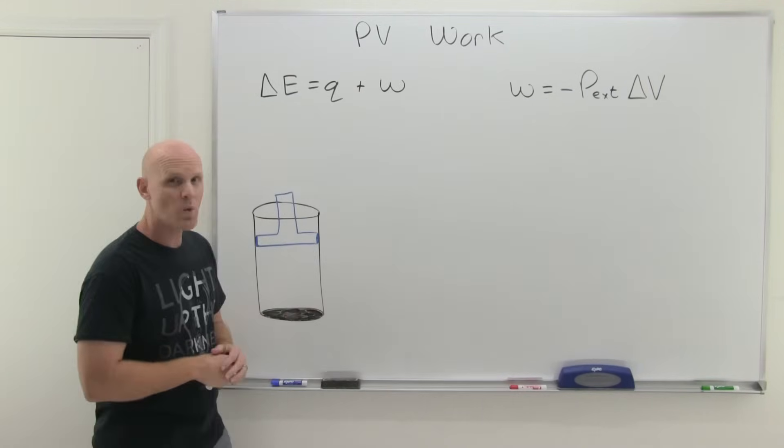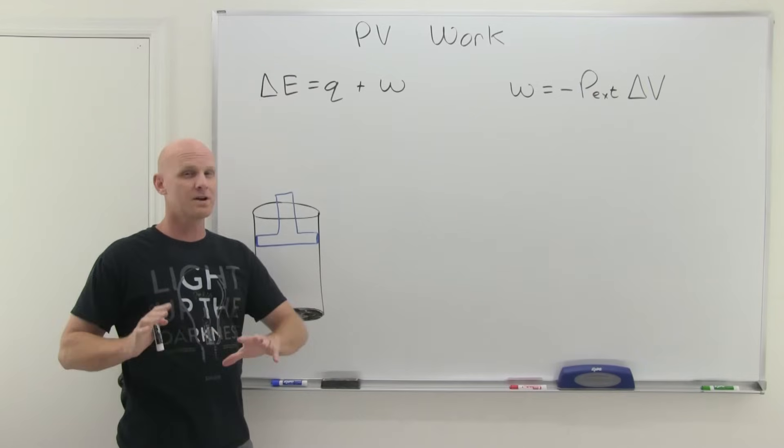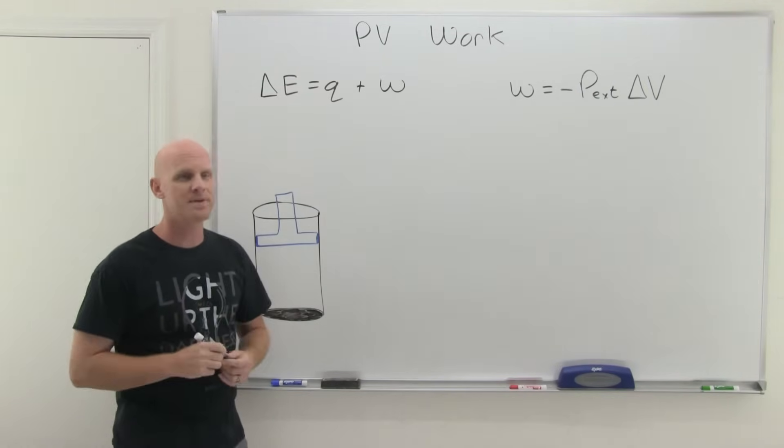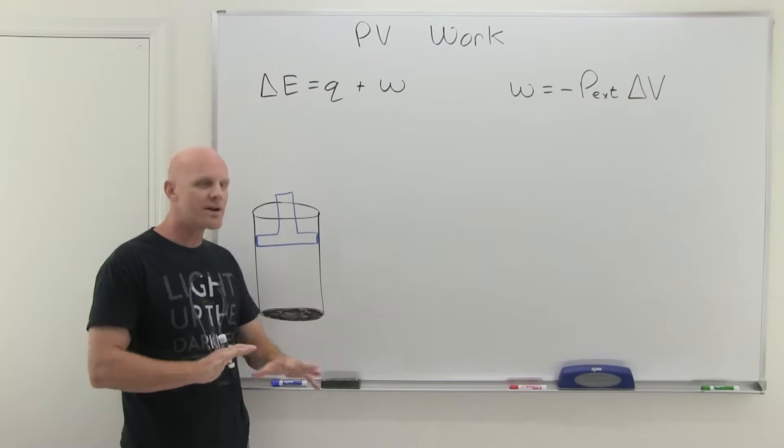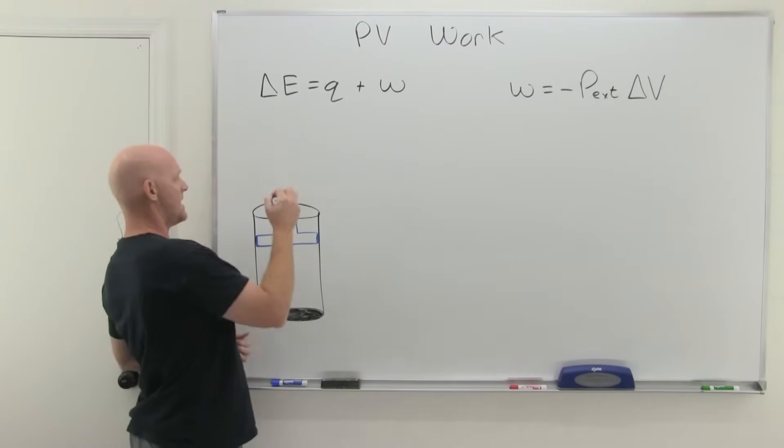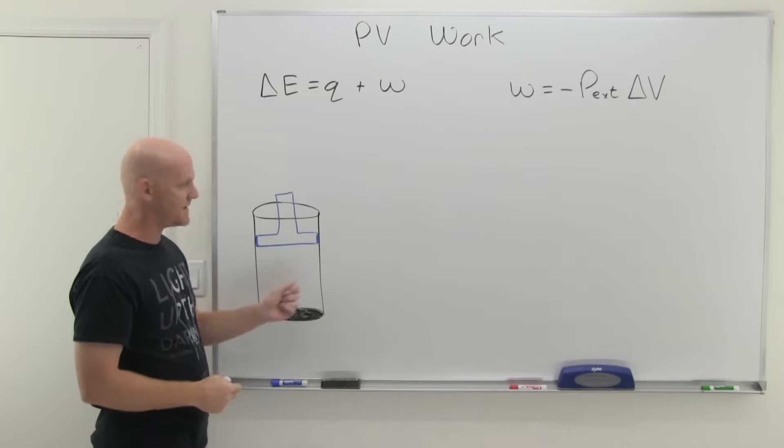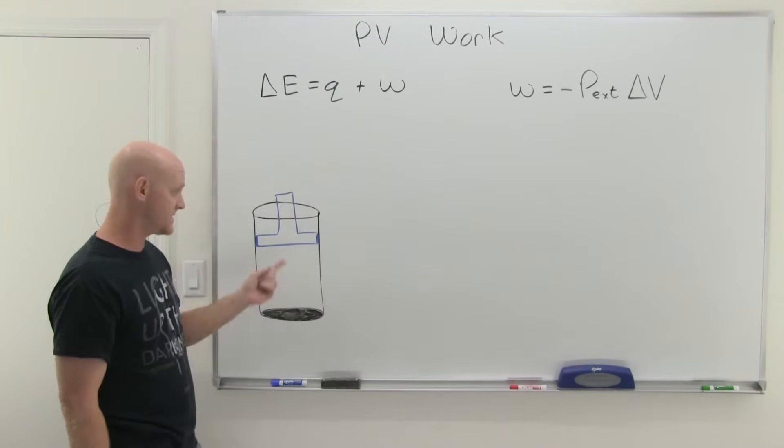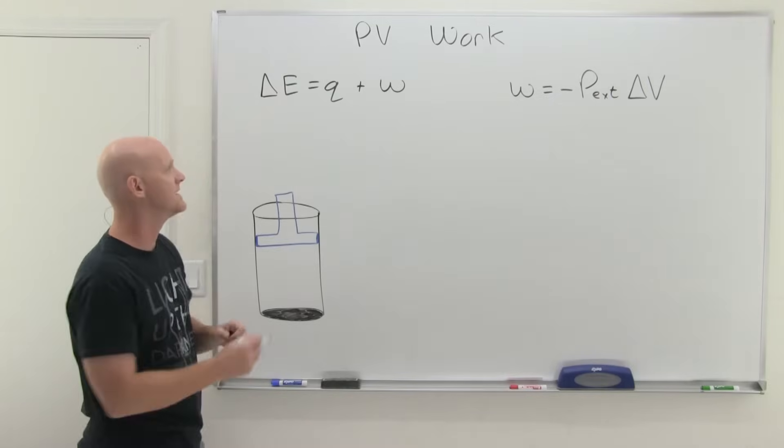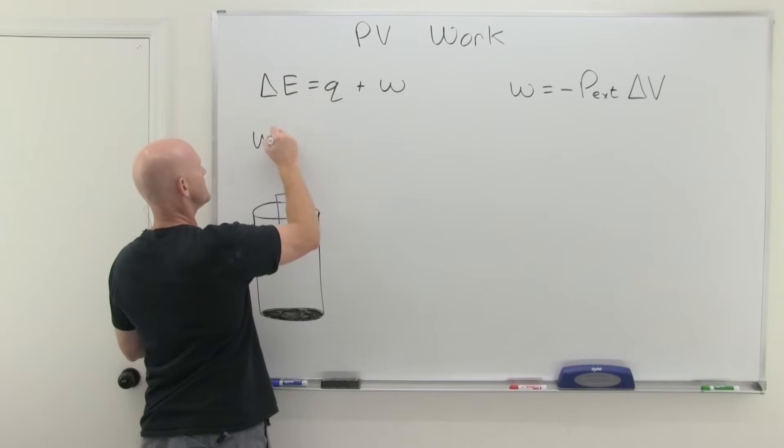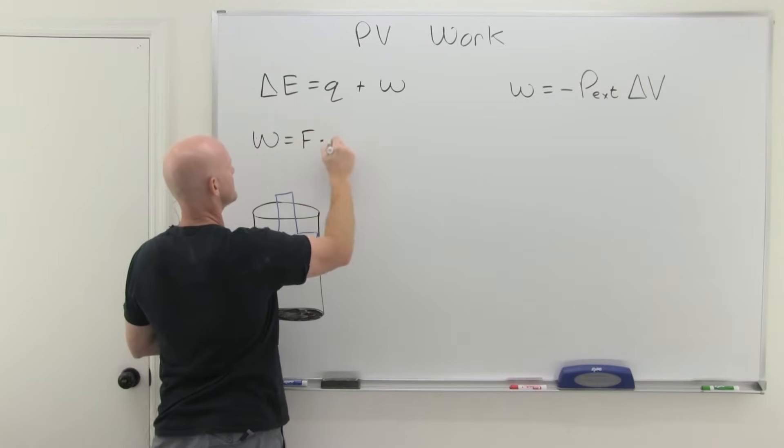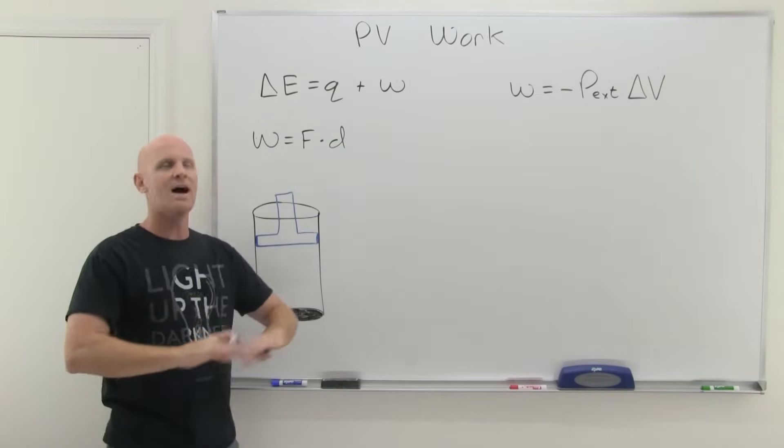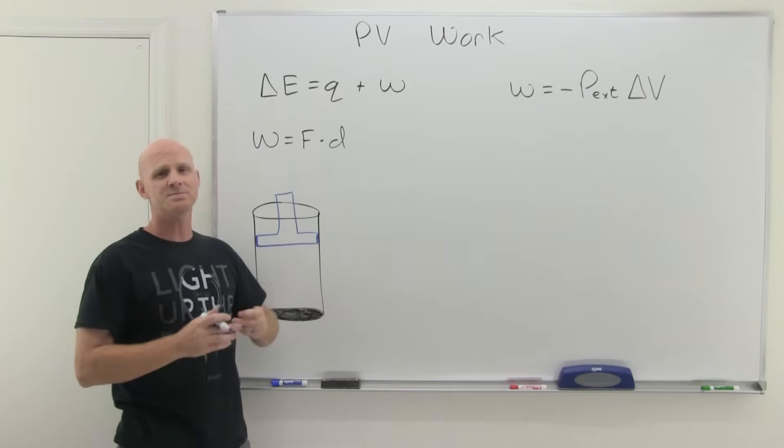So we've got to talk about work a little bit here in a physics context. We're going to take a look at a gas in a piston. The standard definition for work is force times displacement, F times d. That's what we're going to use as our working definition for work in this case, and it comes out in units of joules.